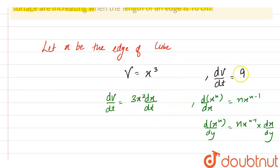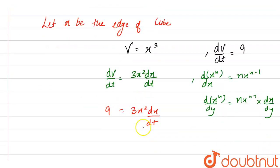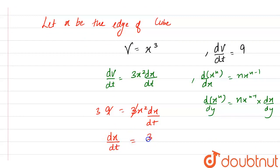We have dV/dt = 9. Substituting this, we get 9 = 3x² dx/dt. The 3 cancels with 9 to give 3, so we can say that dx/dt = 3/x².